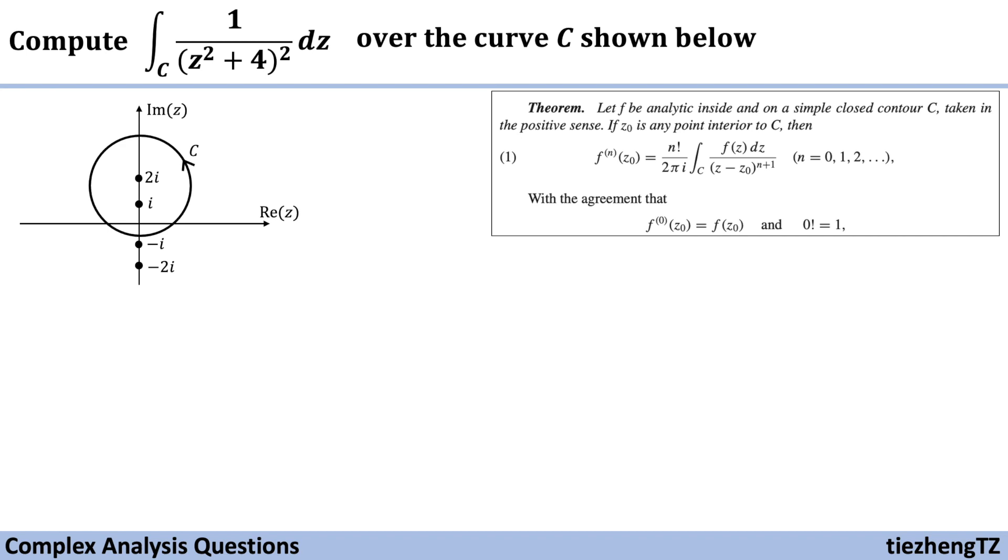And we know the zeroth derivative of f(z) is f(z) itself and 0 factorial is 1. So the key point is that we need to transform the format of the given integral function into the one in that theorem by finding the appropriate point z₀ and the f(z) function.